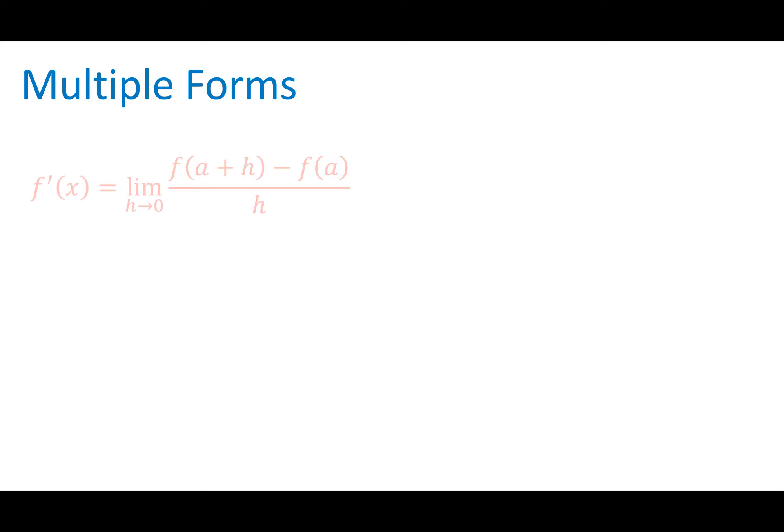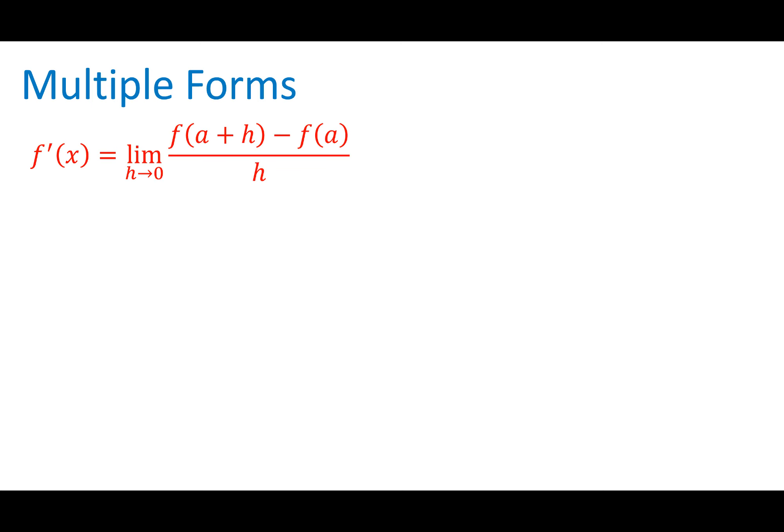So there are multiple forms to write F prime of X. We've seen this one: F prime of X is the limit as H approaches zero of F of X plus H minus F of X, all over H. A's and X's are used interchangeably, which you've seen.